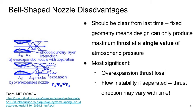The most significant problems from this single-point matching are thrust loss due to over-expansion, and flow instability when we have highly separated flow. This means that the direction of the thrust is not necessarily in the mean flow direction — in fact, the direction of thrust can vary with time. This could obviously lead to highly unstable rocket flight and is highly undesirable.